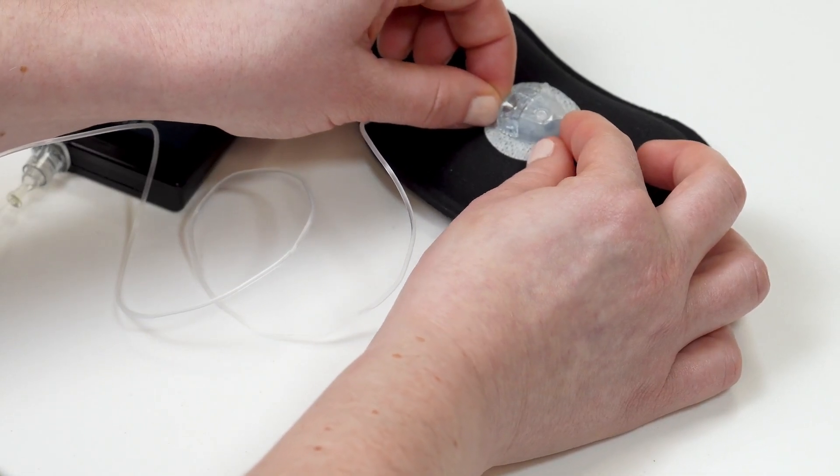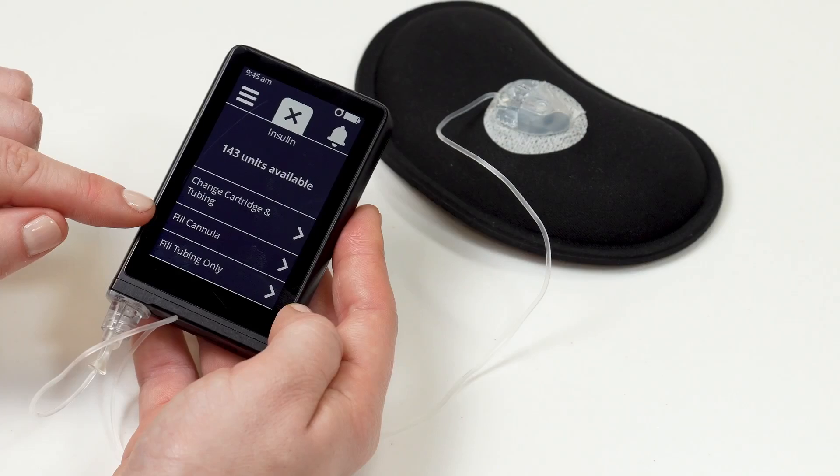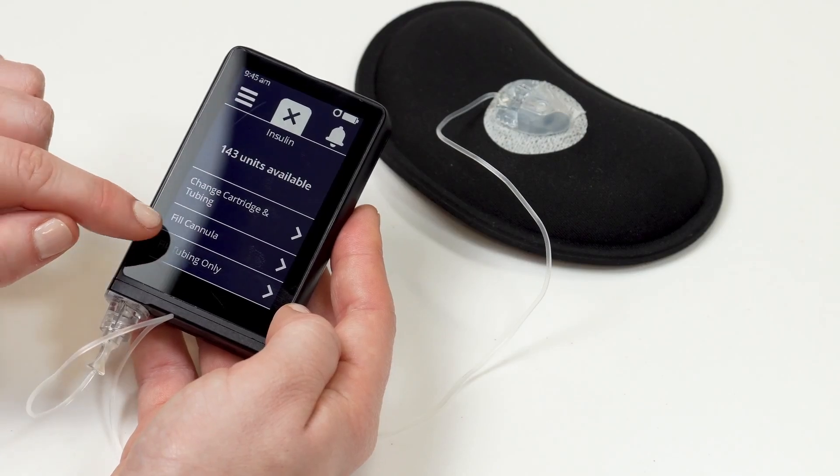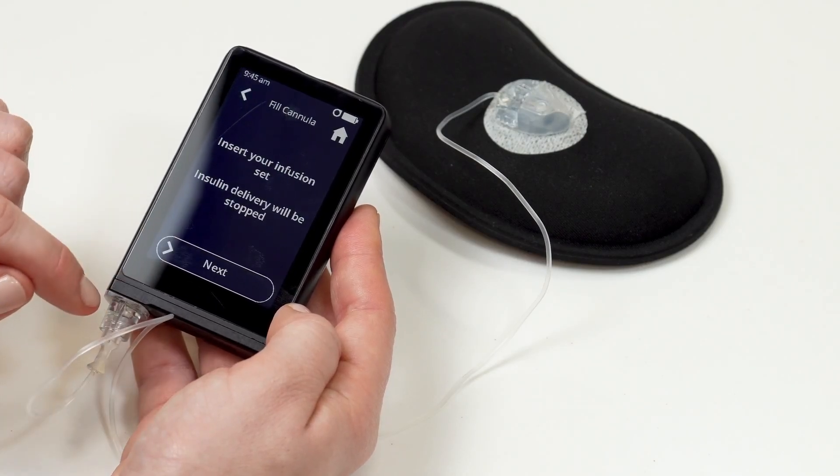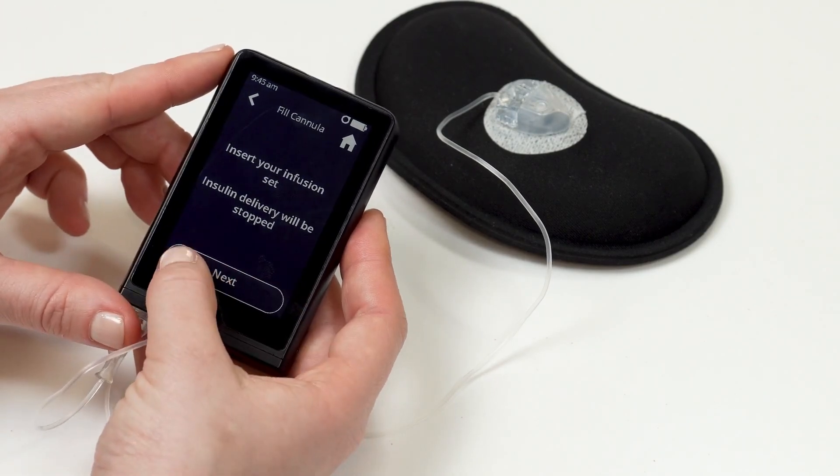Unlock your islet device. Tap the insulin cartridge icon on the home screen of the islet. Tap fill cannula. Swipe next to confirm you have inserted your infusion set.